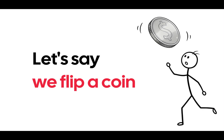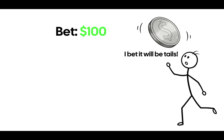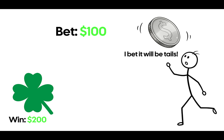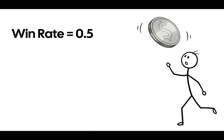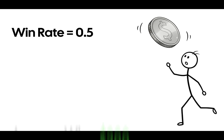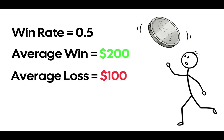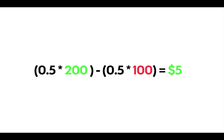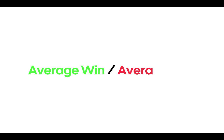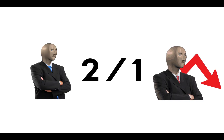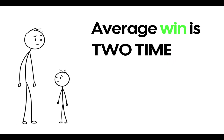Let's take a simple situation to understand how this works. Say we flip a coin and bet that every time we flip it, we'll get tails, wagering $100. If we guess, we pocket another $200 on top of the bet. If we didn't guess, we lose the $100 bet. So: win rate = 50% (0.5), average win = $200, average loss = $100, loss rate = 50%. Substituting into the formula, on average you make $50 per bet. The reward-to-risk ratio is simply the ratio of average win to average loss — for example, 2:1 means you earn $2 when you win and lose $1 when you lose.